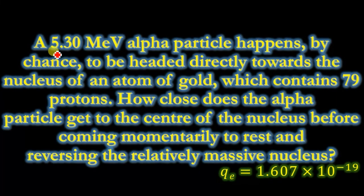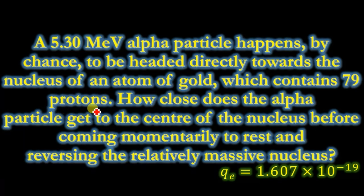Today we will solve this problem: a 5.30 mega electron volt alpha particle happens by chance to be headed directly toward the nucleus of an atom of gold, which contains 79 protons. How close does the alpha particle get to the center of the nucleus before coming momentarily to rest and reversing? The relative mass of the nucleus is also noted.